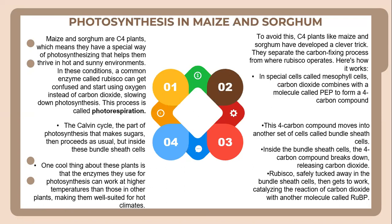In special cells called mesophyll cells, carbon dioxide combines with a molecule called PEP to form a 4-carbon compound. This 4-carbon compound then moves into another set of cells called bundle sheath cells. Inside the bundle sheath cells, the 4-carbon compound breaks down, releasing the carbon dioxide. RuBisCO, safely tucked away in the bundle sheath cells, then gets to work catalyzing the reaction of carbon dioxide with another molecule called RuBP. The Calvin cycle — the part of photosynthesis that makes sugar — then proceeds as usual inside these bundle sheath cells.